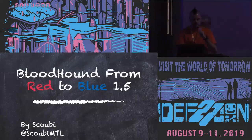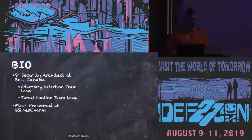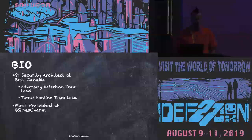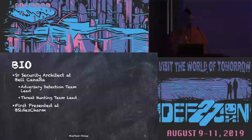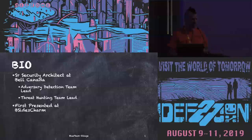Hello everybody. Welcome to this talk called Bloodhound from Red to Blue. I'm Scooby — you can find me on Twitter at ScoobyMTL. I'm a senior security architect at Bell Canada, adversary detection team lead and threat hunting team lead. This talk was first presented at B-Side Charm a few months ago, so if there are parts I need to skip, I'll refer you to that talk. I may go a bit faster because I've added a few things.